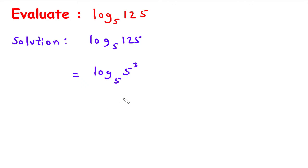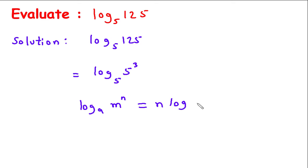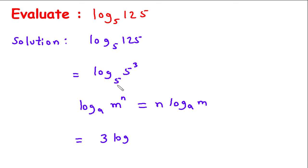We have the logarithmic formula: log of m to the power n to the base a can be written as n into log of m to the base a. Similarly, here a is 5, m is 5, and n is 3. So this will be 3 into log of 5 to the base 5.